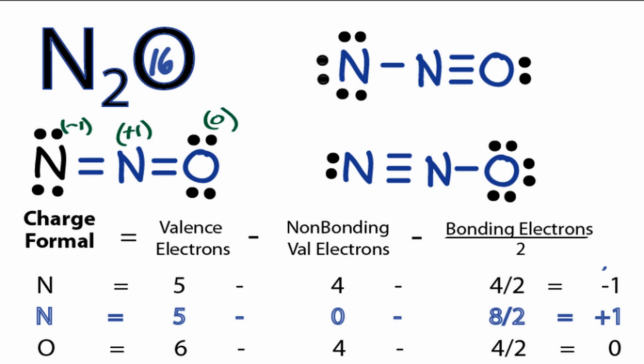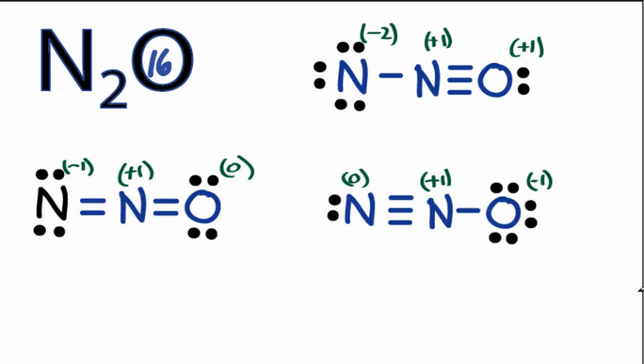We can calculate the formal charges on the other Lewis structures for N2O the same way. We want to choose the Lewis structure with formal charges closest to 0. When we look at this one with negative 2 and plus 1, this one's out.